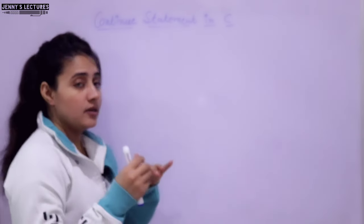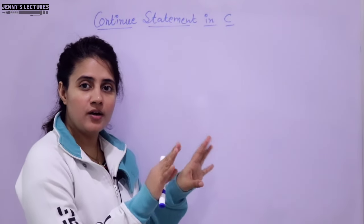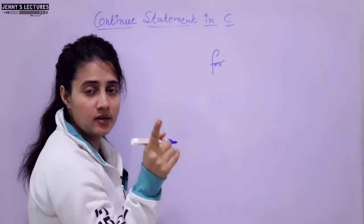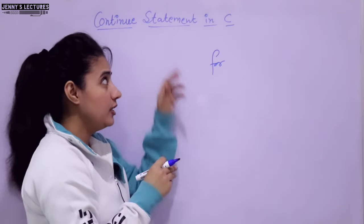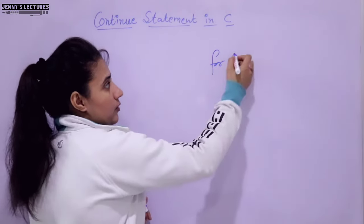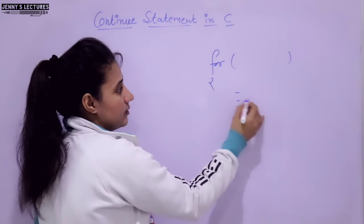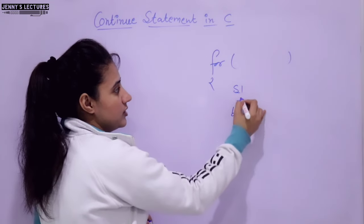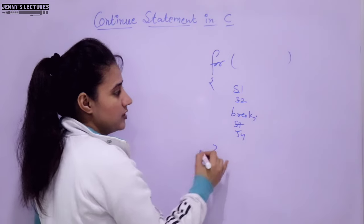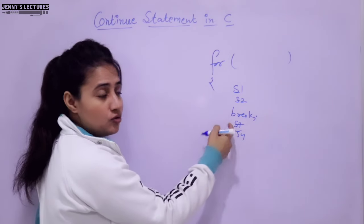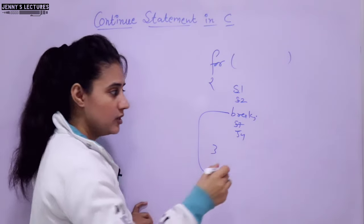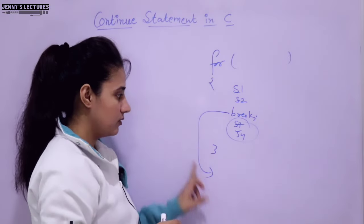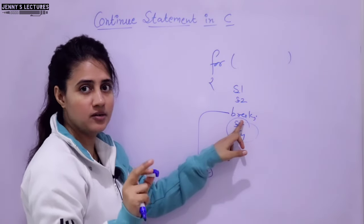Let us see what is the continue statement in C. I hope you remember the working of the break statement. If you write break within a loop - we can use break within loops or with a switch statement. Suppose statement 1, statement 2, statement 3, statement 4 are there, and I write break. As soon as this break is encountered, control will directly go out of the loop. Those remaining statements would not be executed. It will throw you out of the loop as soon as the break statement is encountered.